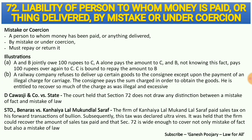Section 72 discusses the liability of a person to whom money is paid or something is delivered by mistake or under coercion. For example, if A and B both owe rupees 100 to C, and B pays C, but then A also goes and pays C the same 100 rupees without knowing B already paid — that is payment by mistake. In that case, C is liable to repay that amount to B. A person to whom money has been paid or anything delivered by mistake or under coercion must repay or return it.